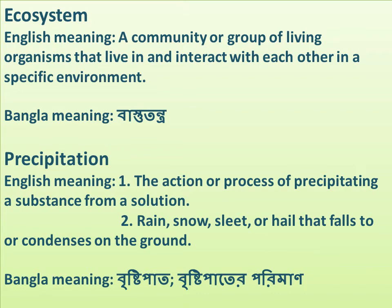Precipitation — two meanings in English. Number one: the action or process of precipitating a substance from a solution. Number two: rain, snow, sleet, or hail that falls to or condenses on the ground. Bangla meaning: prishtipat athaba prishtipatipurimhan.